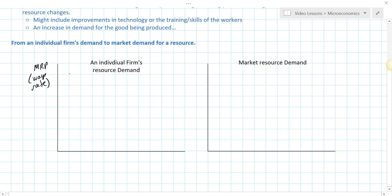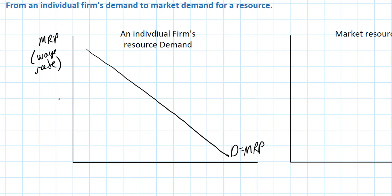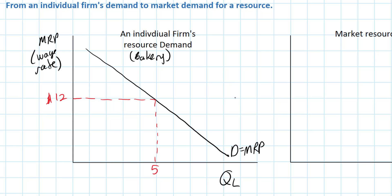So the demand for labor represents the marginal revenue product. Let's say that at a wage rate of $12, this individual firm would wish to employ 5 workers. The quantity of labor demanded at a wage rate of $12 is 5 workers. That corresponds with the numbers we used in the last video. The question then is how many total workers would be demanded in this labor market — let's say the market for baked goods. This is one individual bakery, and there are let's say 100 bakeries in this market. This is a big city.